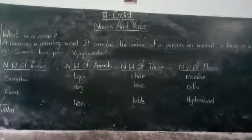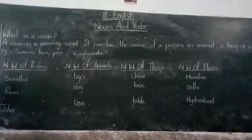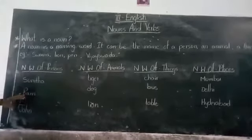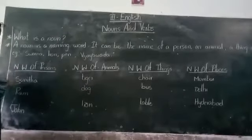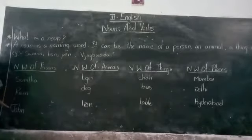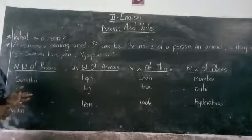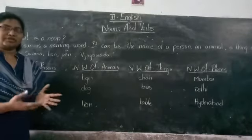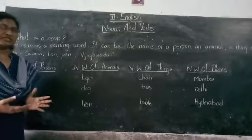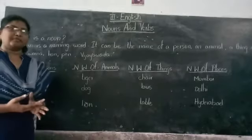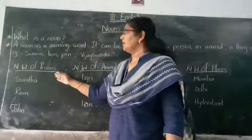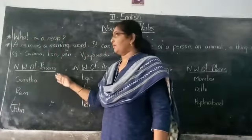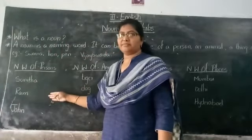Coming to naming word of persons — I'll give you some names. Due to lack of space I give you only a few: Dozan, Sunita, Ram, John. You can also add your own name, your father's name, your mother's name, your teacher's name, and your friends' names. All human beings' names belong to the persons' names category.